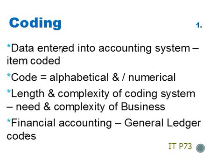When data is entered into an accounting system, each item is coded with a specific code. The code can be alphabetical and/or numerical. The length and complexity of the coding system will depend on the needs and complexity of the business. For financial accounting, normally the codes used are general ledger codes, which relate to the different areas of the statement of financial position, balance sheet, and the income statement.